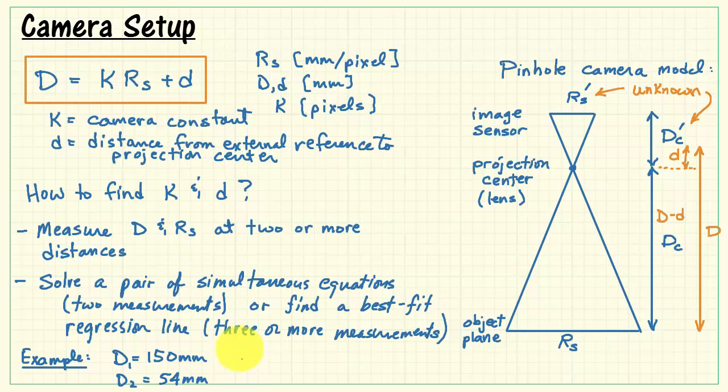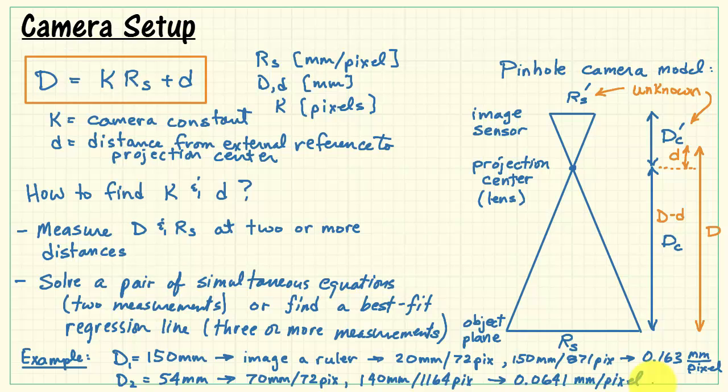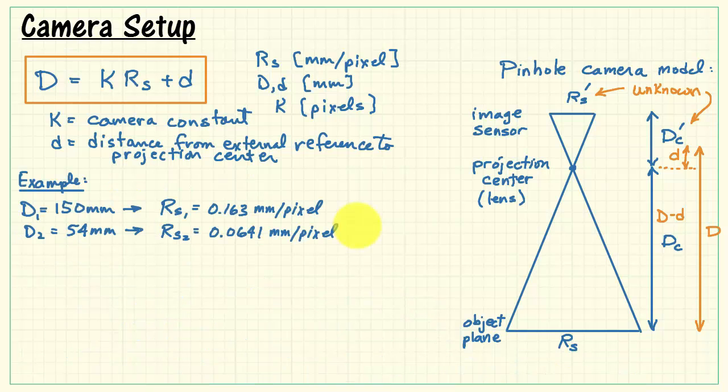Here's an example. I took some measurements at two different camera distances, d1 and d2. I took an image of a ruler. I found the millimeter marks in two different places on the ruler and the associated pixel values at these two locations, and came up with 0.163 millimeters per pixel for the first measurement. Second measurement, where the camera is closer, came up with a different value, 0.0641 millimeters per pixel.